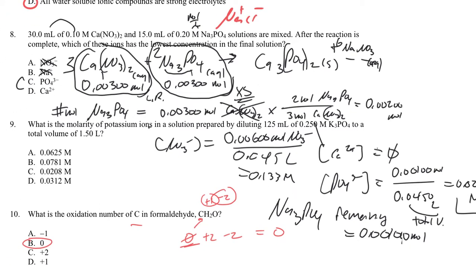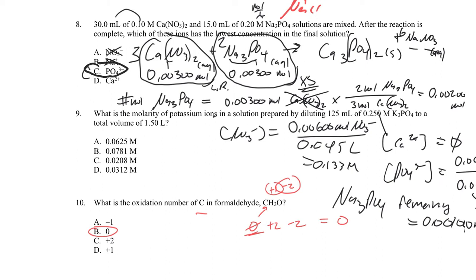Sodium and nitrate are spectator ions — unchanged by the reaction. Once you know how many moles of nitrate or sodium you have, you can work out their concentrations. The lowest concentration is actually calcium, which went to zero as the limiting reactant that was precipitated. Phosphate is the next lowest since it was precipitated but was the excess reactant. Nitrate and sodium remain relatively high in concentration.